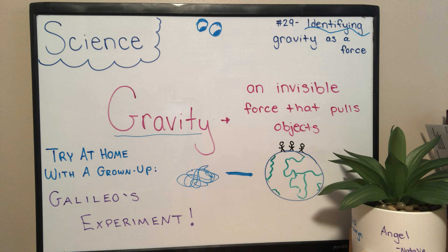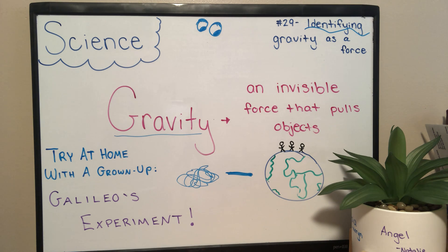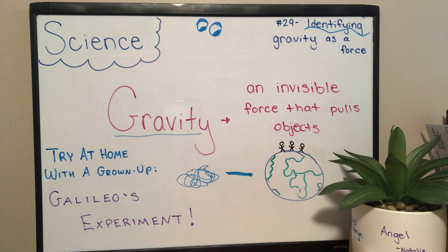Go ahead and sit back down. If there was no gravity, when you jumped up, you wouldn't come back down — you would just stay there and kind of float around the room like astronauts do. There's no gravity in space.